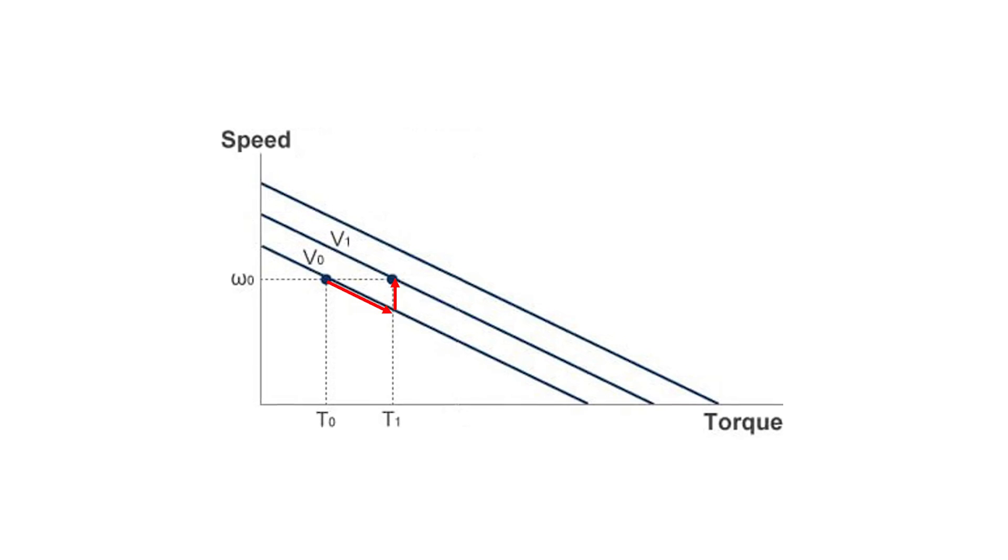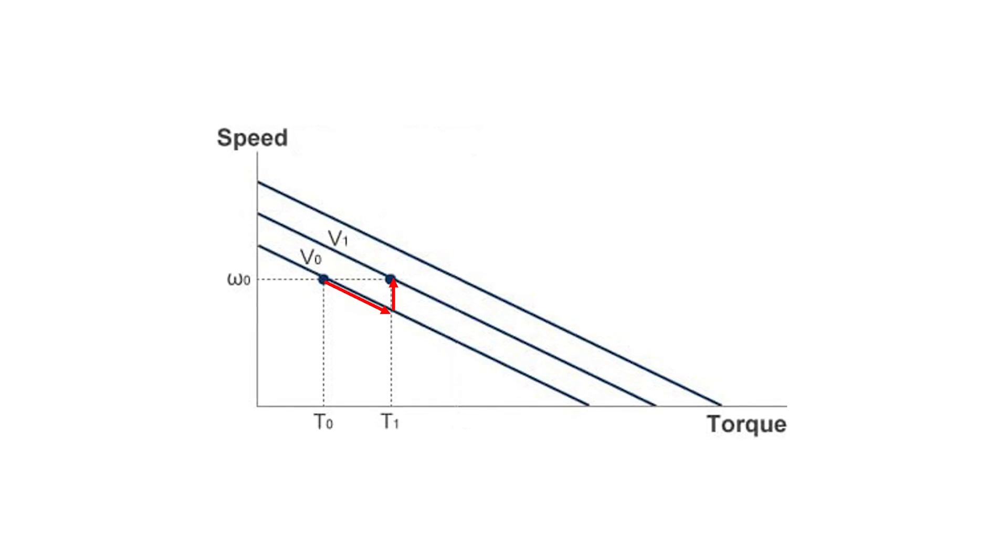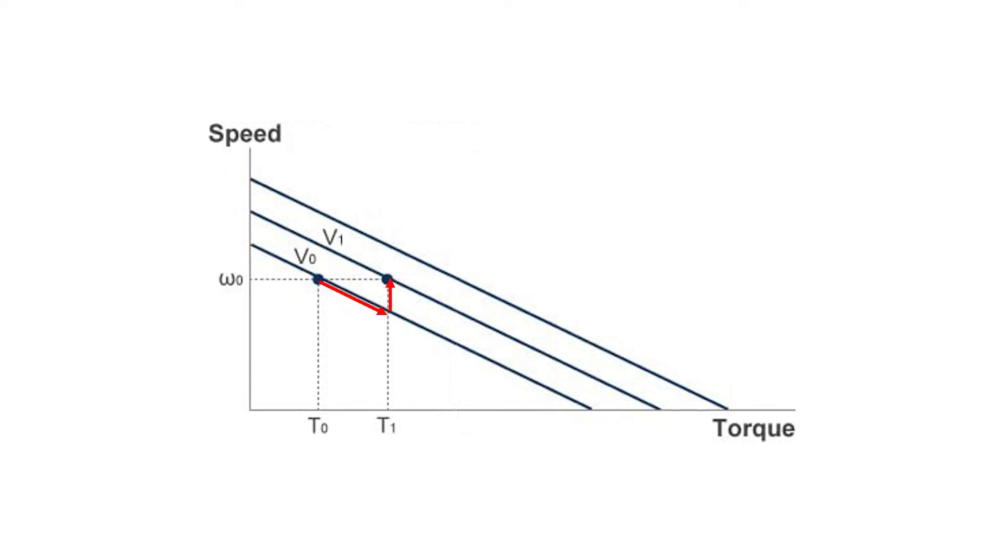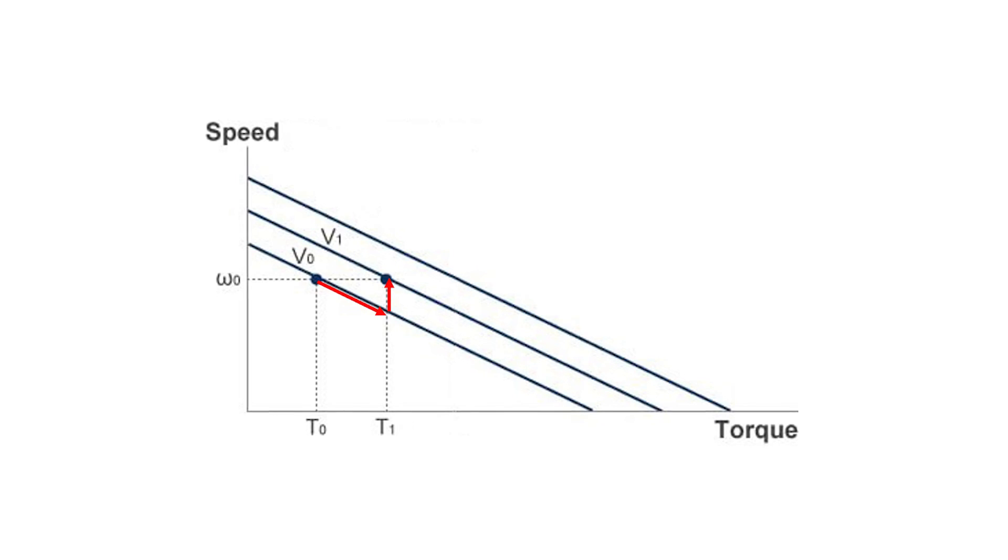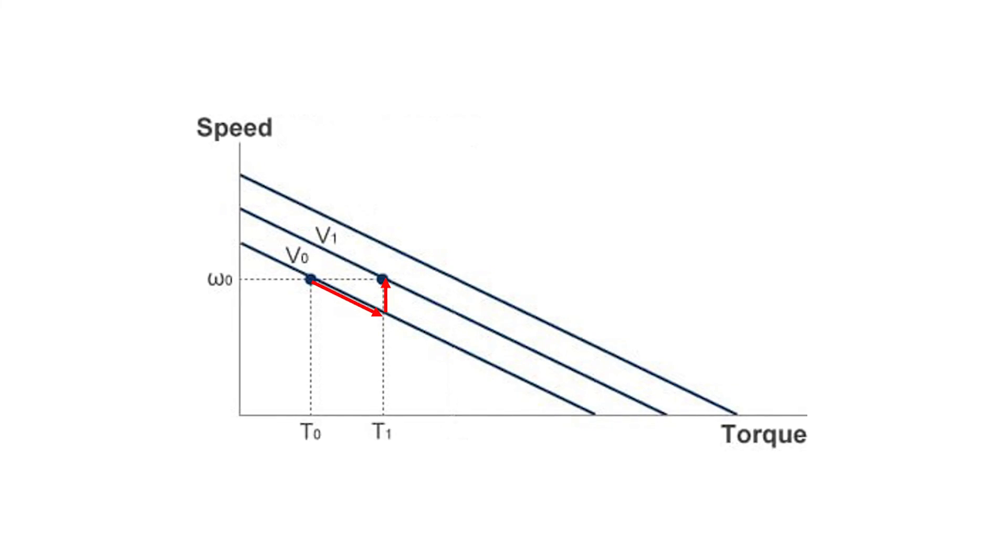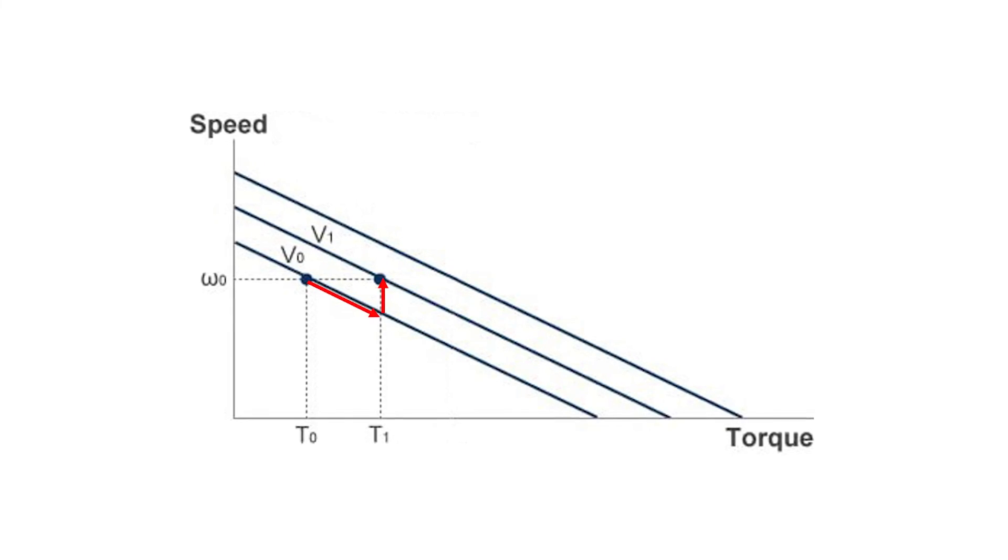But recall that back EMF is directly related to motor speed, so when the speed decreases, so does the induced back EMF that's opposing the supply voltage. This means the voltage across the motor will increase from V sub zero to V sub one. This increase in voltage also causes the current across the motor to increase, and the additional current produces the extra torque the motor needs in order to regain its original speed with the increased load. This is seen here as a move on the horizontal axis from T sub zero to T sub one.